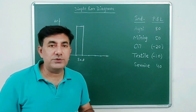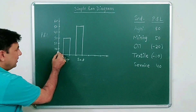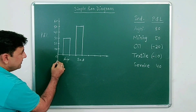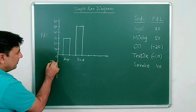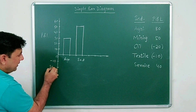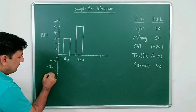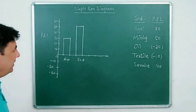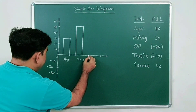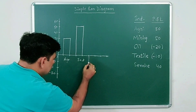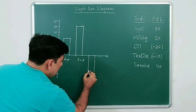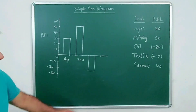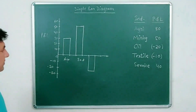For Oil, there is a loss of 20 crores, so the question is how to plot this. You extend the axis below zero — this is the origin at zero — and mark minus 10, minus 20, minus 30 with equal gaps below. Oil is at minus 20, so draw the bar downward to minus 20.